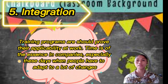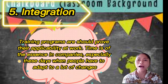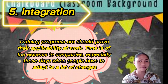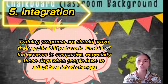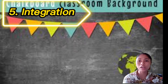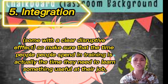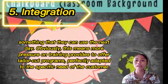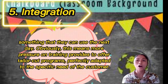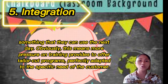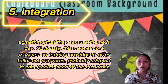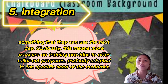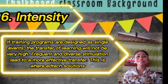Fifth is integration. Training programs should prove their applicability at work. Time is of the essence in companies, especially when people have to adapt to many changes. Make sure that the time people spend in training is actually time they need to learn something useful at their job — something they can use the next day. This means more pressure on training providers to offer tailored programs adapted to the specific needs of each customer. Sixth is intensity.